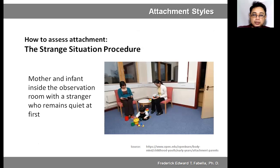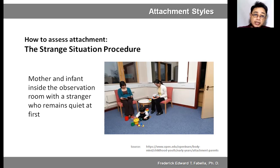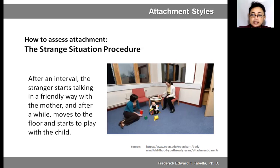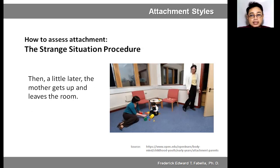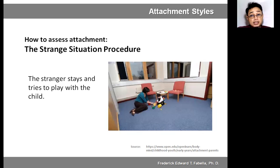In the strange situation procedure, the mother sits with her child who plays with toys on the floor, while a stranger remains quiet. After an interval, the stranger starts talking in a friendly way with the mother and then moves to the floor to play with the child. Later, the mother gets up and leaves the room, leaving only the child and the stranger, who stays and tries to play with the child.